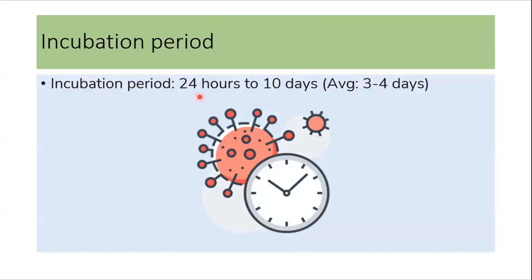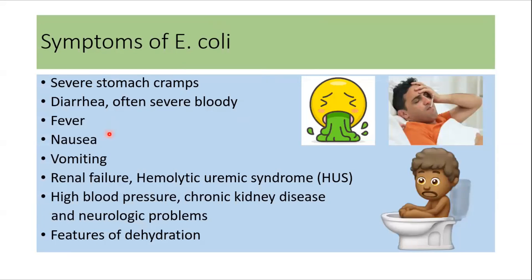The incubation period ranges from 24 hours to 10 days, but most patients develop symptoms around three to four days after exposure. Symptoms include severe stomach cramps and diarrhea, which can be bloody. Patients can present with fever, nausea, and vomiting. Some present with features of hemolytic uremic syndrome, including renal failure, thrombocytopenia, high blood pressure, and progression to chronic kidney disease or neurological problems. If diarrhea is severe, patients can present with features of severe dehydration.